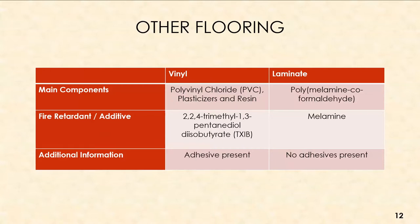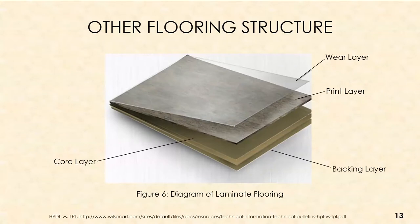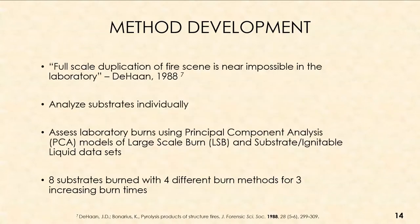An important feature of both vinyl and laminate is that there is an air pocket between the floor layer and the underlying base of the structure. This means fire can actually persist underneath, and it's very important to realize that fire can happen from below — which could potentially affect the output chromatographic profile. For laminate's structure, there is a wear layer, print layer, core layer, and backing layer; the core is similar to particle board, while the wear and print layers constitute the majority of observable material.